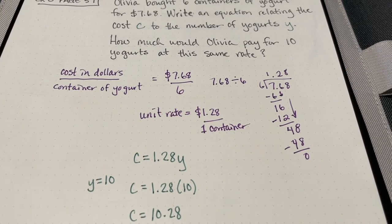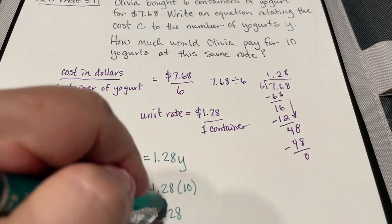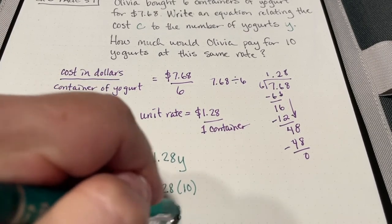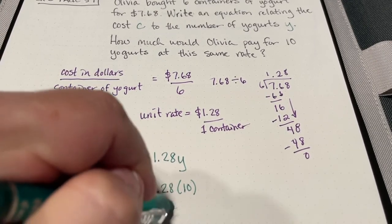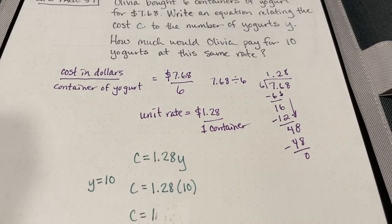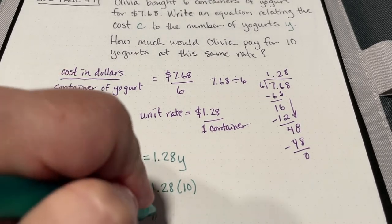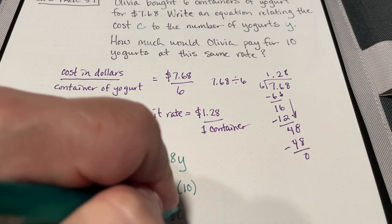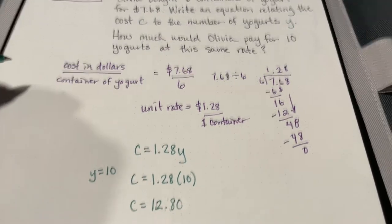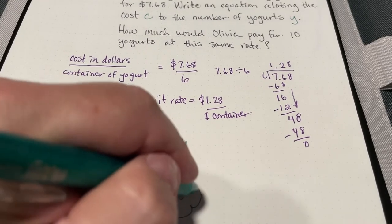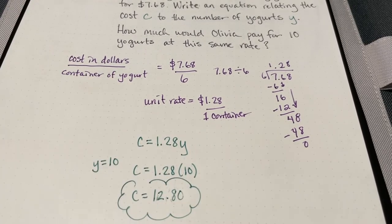Wait — that is incorrect. The correct answer should be $12.80 — that's the cost for 10 yogurts.